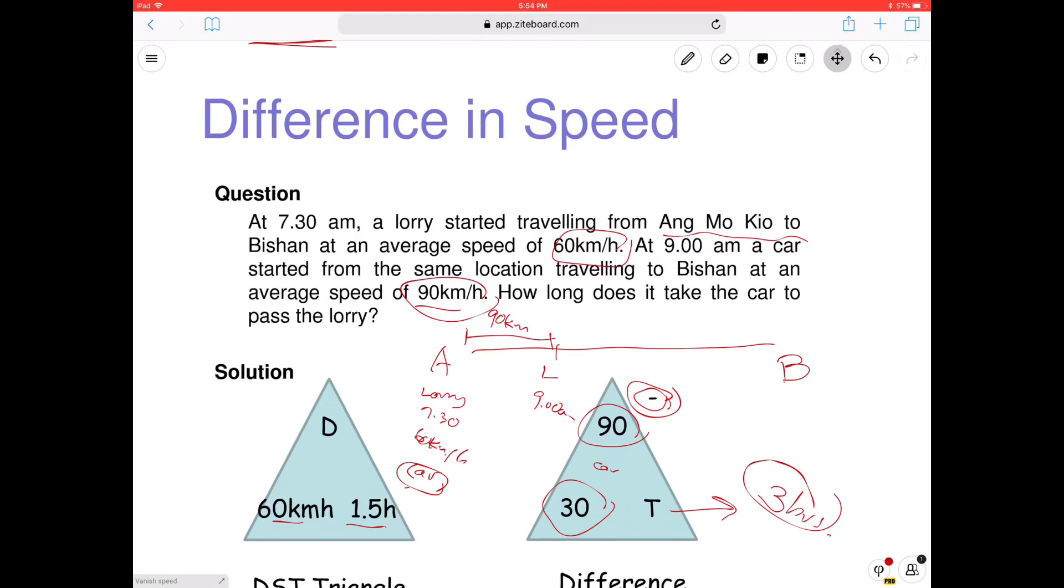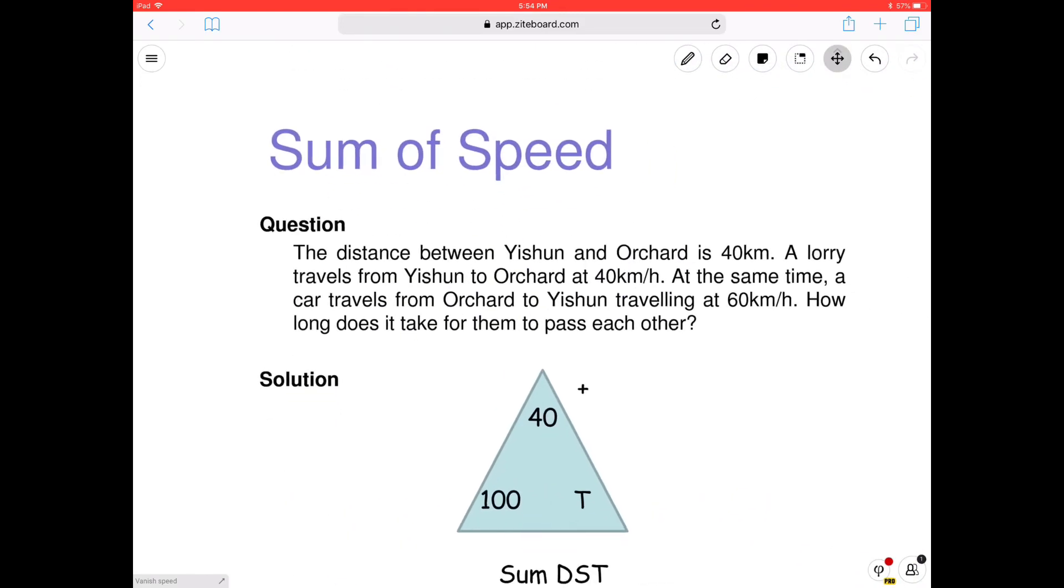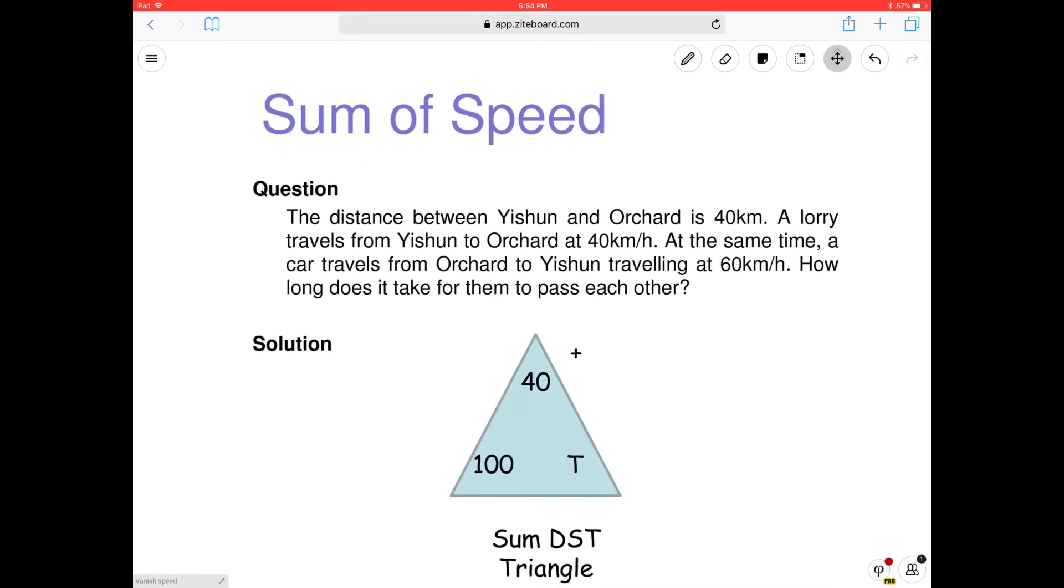Okay. How about the sum? Have you learnt this time? Difference? Never, right? Later, we're going to try some questions, right? Okay, the sum of speed. Take a look at this. So sometimes you need to add. Okay? Under what type of situation? Let's take a look. So the distance between Yishun and Orchard is 40 kilometers. So a lorry travels from Yishun to Orchard at 40 kilometers per hour. At the same time, a car travels from Orchard to Yishun. So now, we have Yishun and Orchard. And we have a lorry. Lorry is here, traveling this direction. And we have a car. A car is traveling this direction. So they are trying to meet. The question is, at what time? How long does it take for them to pass? Pass means they meet. Meet. Right?